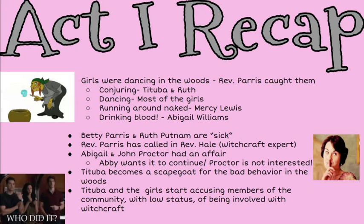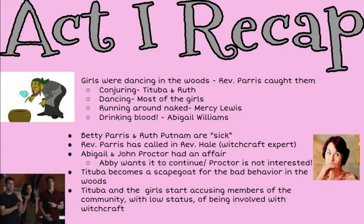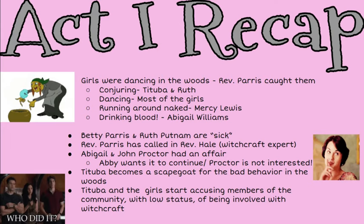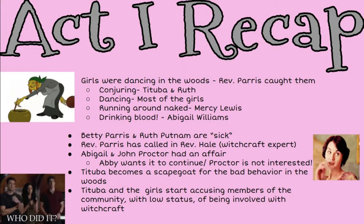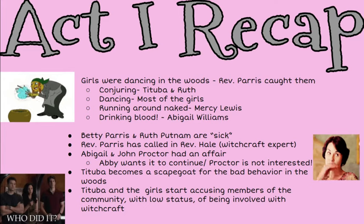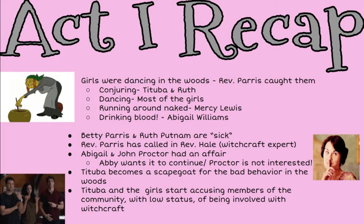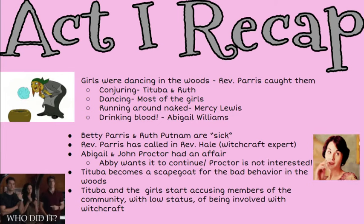So Reverend Parris calls in Reverend Hale, who is the witchcraft expert. We find out that Abigail and John Proctor had an affair. Abby wants to continue the affair, which is why she drinks blood — she wants to kill Elizabeth Proctor and get her out of the way so she can be with John Proctor. But John Proctor is not interested in continuing the affair. When Reverend Hale arrives and questions Abigail, she feels pressure and doesn't want to get in trouble, so she blames Tituba.